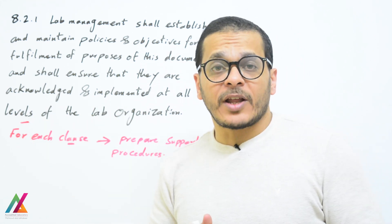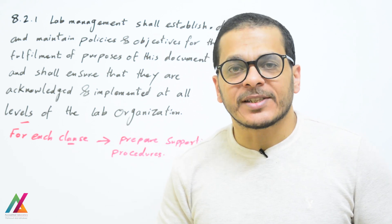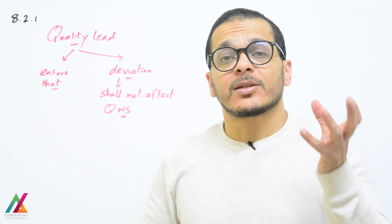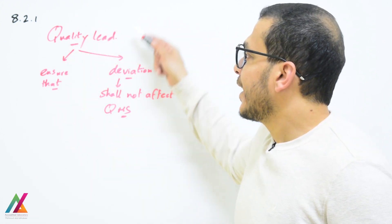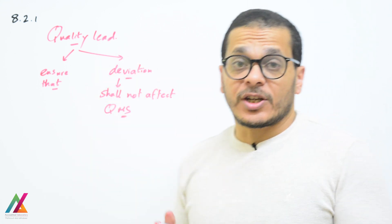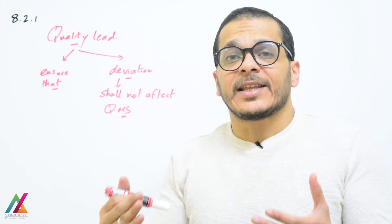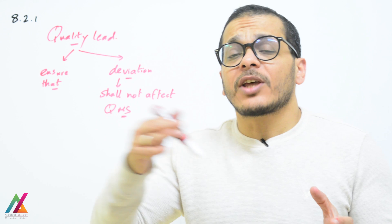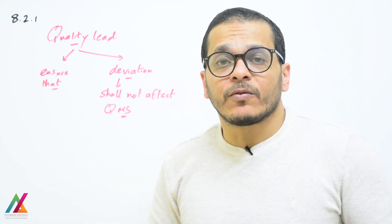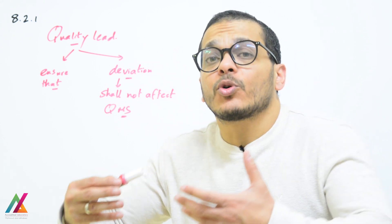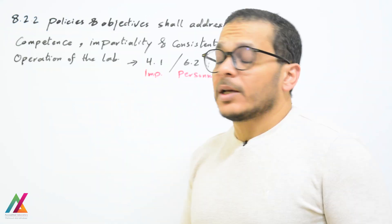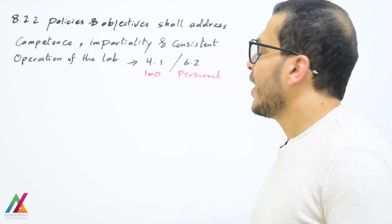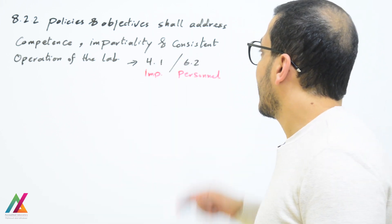The quality manager is responsible for ensuring that all procedures are followed and implemented. If there is any deviation in procedures or lab activities, the quality manager shall ensure this deviation does not negatively affect the lab management system or the quality of results, but instead contributes to improvement. The policies and objectives shall address competence of personnel, impartiality, and consistent operation of the lab.